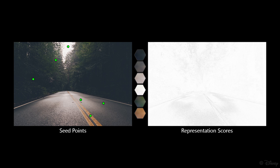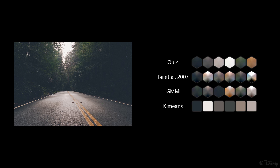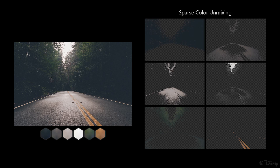We efficiently compute representation scores using the novel projected color unmixing formulation. We can detect colors with high saturation or brightness, as well as colors covering small areas, unlike the competing methods. Our color distributions have smaller variances, which makes them more descriptive. We use the color model as an input to the novel sparse color unmixing, which gives us a preliminary set of layers.